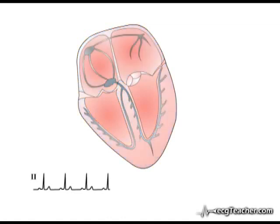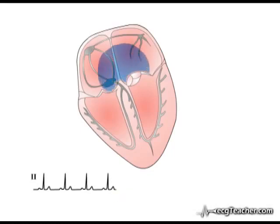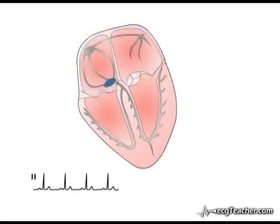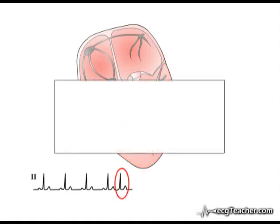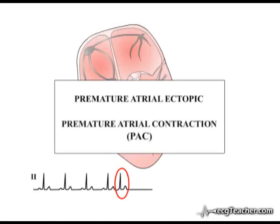This is a normal heart in sinus rhythm. At this point, a region of the atrium has developed enhanced automaticity and has discharged a depolarising current. Initially it triggers atrial depolarisation. The wave is transmitted by the AV node into the ventricular conducting system, triggering ventricular depolarisation. This is a premature atrial ectopic, or as it is frequently referred to, a premature atrial contraction.